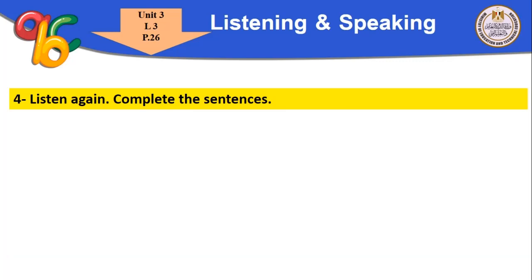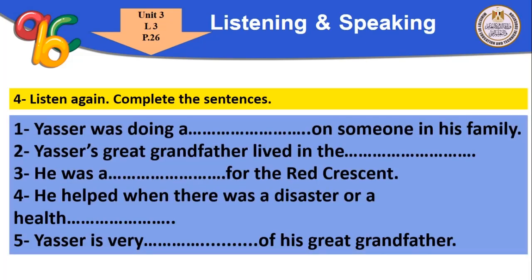Listen again and complete the sentences. Number one: Yasser was doing a school project about someone in his family. Number two: his great grandfather lived in the countryside. Number three: he was a volunteer for the Red Crescent.